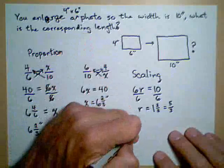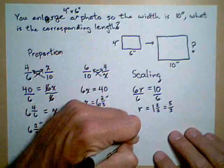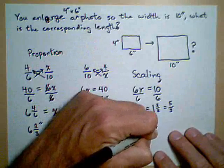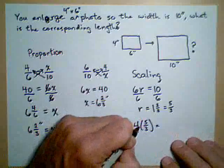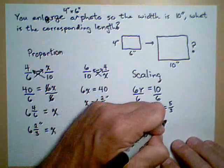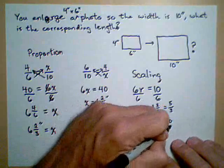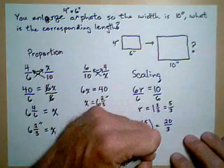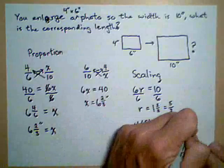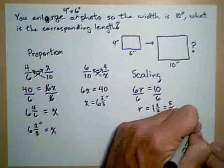To determine what our new side would be, we would take the other side, 4, and multiply it by our scaling factor of 5 thirds. Multiplying across, remember that we think of this as 4 over 1. So 4 times 5 is 20, 1 times 3 is 3. So we get 20 thirds, which is 6 and 2 thirds inches.